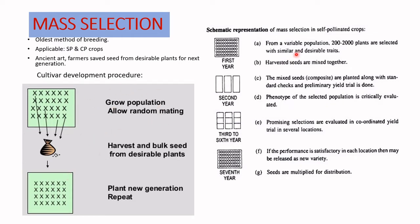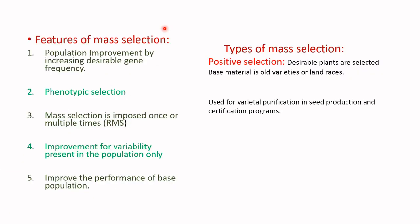From a population of 200 to 2000 plants, similar and desirable plants are selected and grown alongside check or control varieties. Superior lines are selected and proceed to the next generation, passing a preliminary yield trial. Then multi-locational trials are conducted in farmers' fields or research stations, and if the variety surpasses the requirements of the multi-locational trial, it will be released as a mass-selected variety.